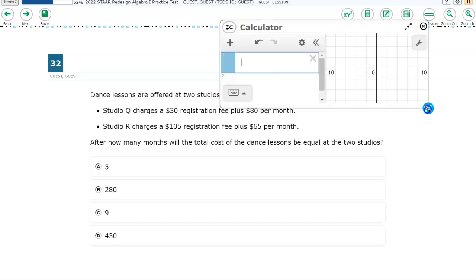Let's see if we can write an equation for this one. I'm going to type a capital Q for Studio Q. And then I'm going to do an X for my months. You could use an M or N for number of months. But I'll use X. And then I'm going to say that's equal to, we're starting with $30. And we're going to add, because it says plus, $80 per month. So we'll put an X for months. Let's do another one for Studio R. This one charges $105. So we'll put a capital R. And then we'll put R of X equals 105 registration fee plus $65 per month. So 65. And our variable is X.